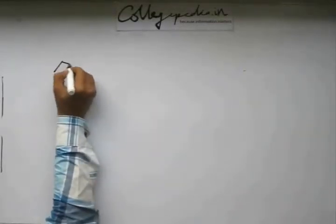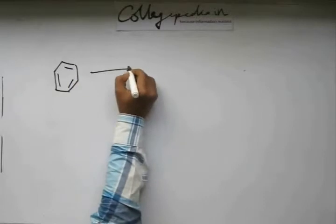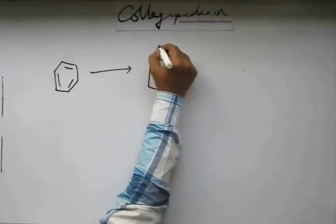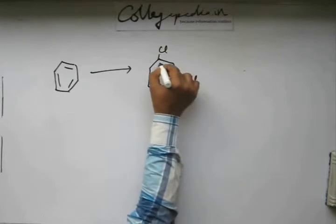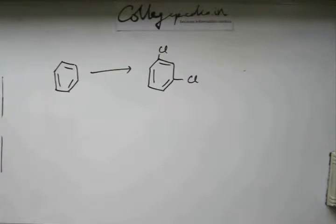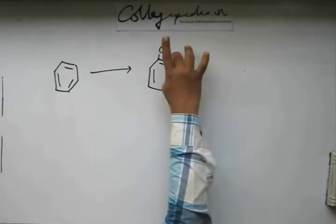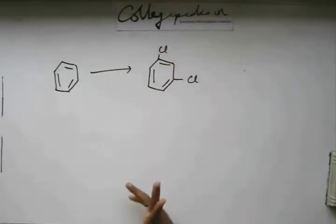Last one. Suppose I have benzene and I want 1,3-dichlorobenzene from benzene. It's a relatively easier one, and you'll have an idea from the experience of the last conversions - this conversion shouldn't be very difficult for you. We know that chlorine, or any other halogen for that matter, is ortho-para directing.